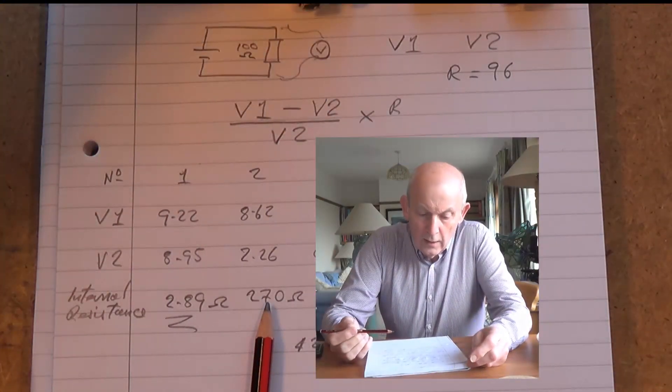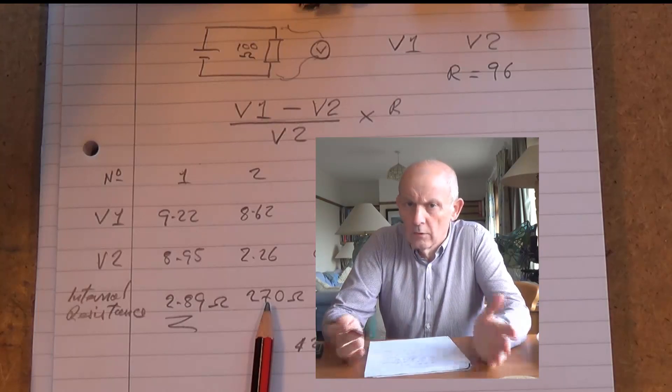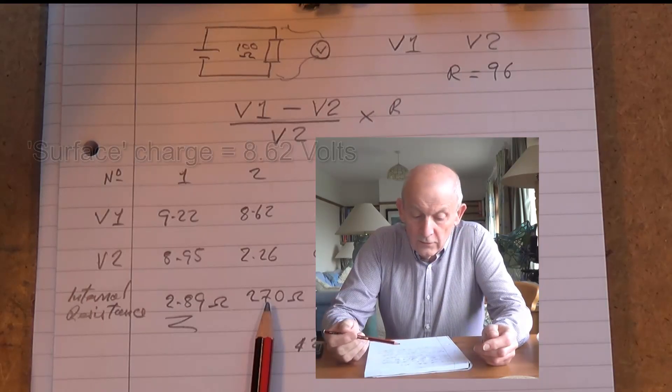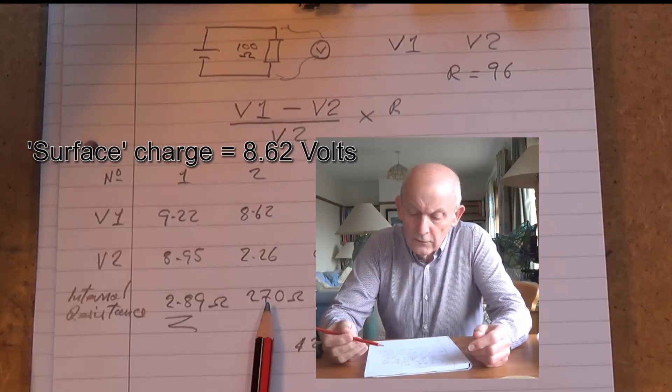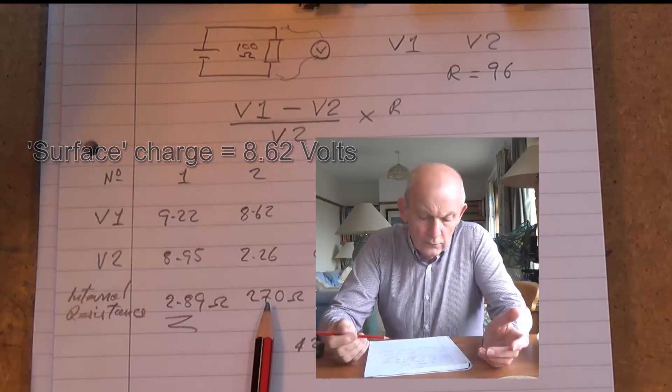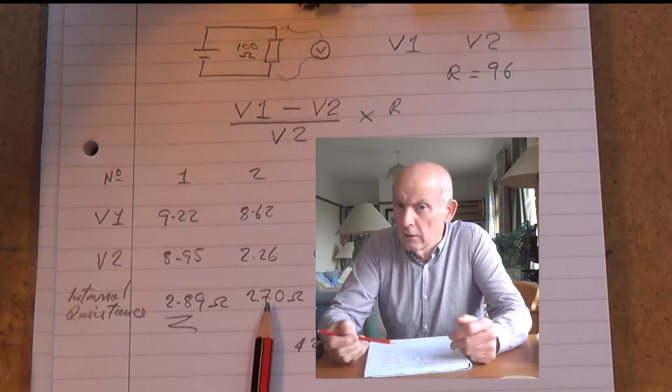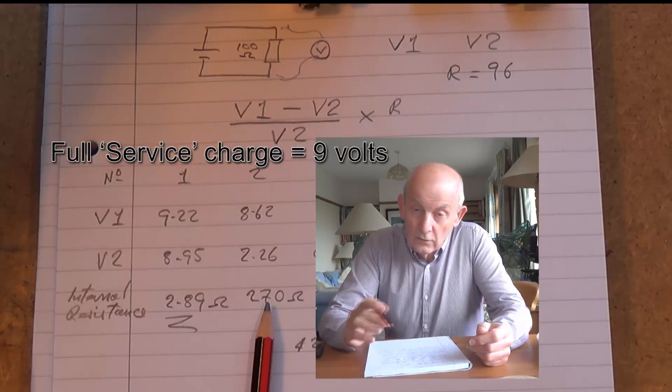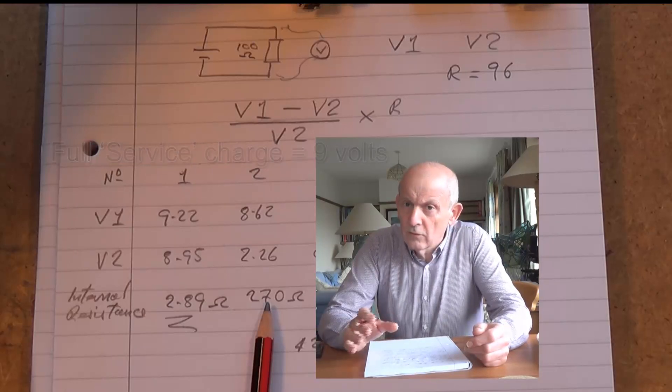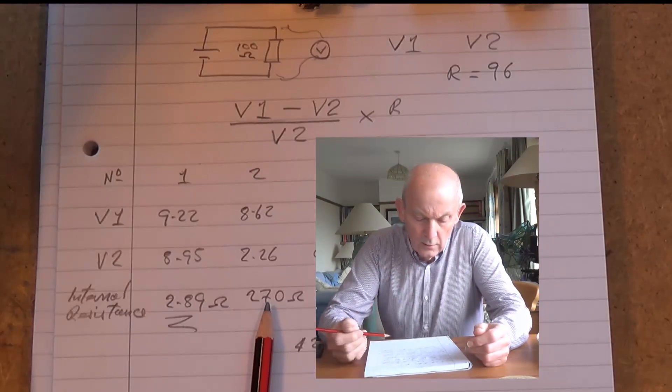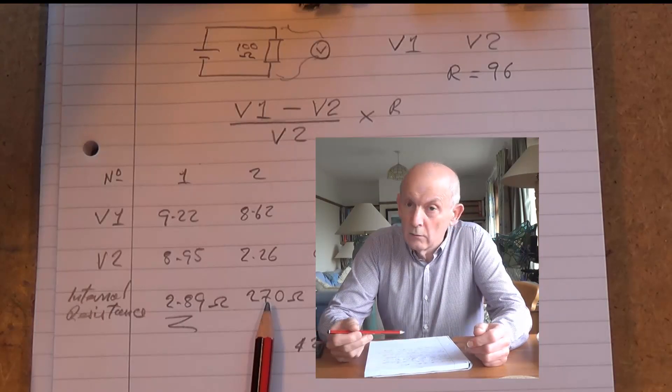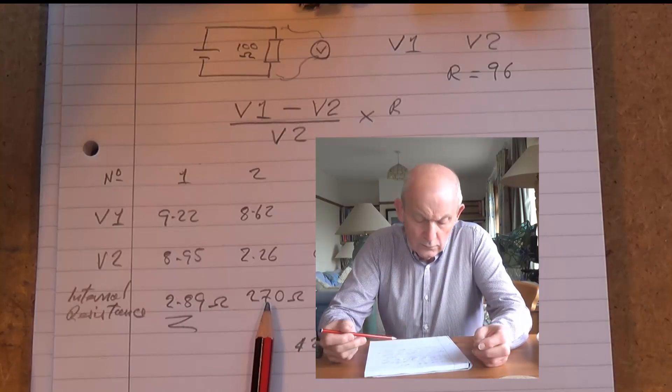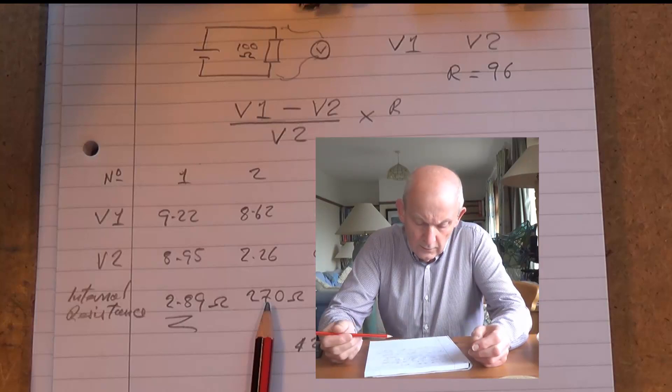If we just stop for a moment and look at that battery number two, it's a nine volt battery. The surface charge, that's the top layer of charge that it has, is 8.62 volts. When you work that out, that's actually 95.7 percent of its full nine volts, so it's full surface charge. So you might be forgiven for thinking well that's not too bad, you know it looks quite good. But when we loaded it with the 96 ohm resistor, that voltage fell to 2.26 volts and that's across the 96 ohm resistor.